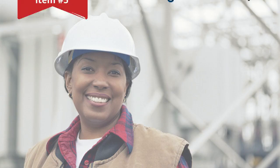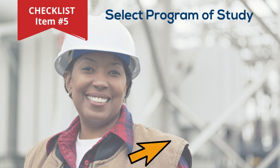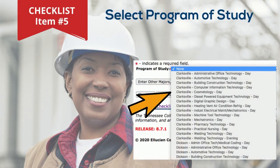In checklist item five, you'll select your program of study. In this example, the applicant has chosen TCAT-Dixon. The program of study drop-down reveals all programs available through TCAT-Dixon at its satellite and main campus locations, and if the program is offered during the day or evening.